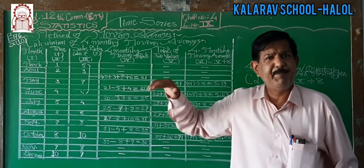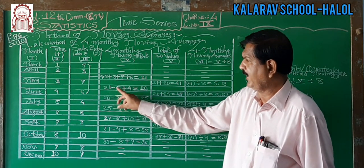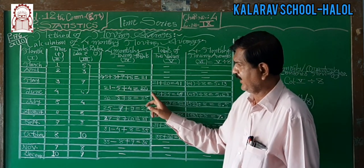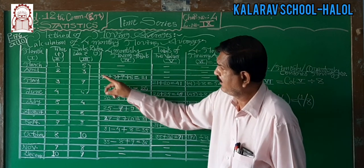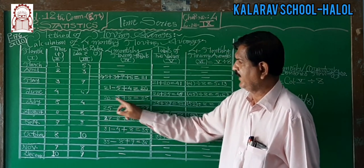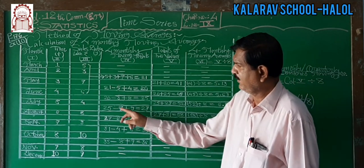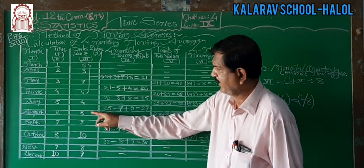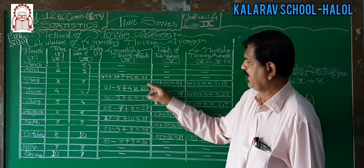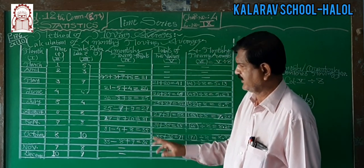To get the next total: subtract the previous month and add the next month. So 21 minus 5 plus 4 equals 20. Then 21 minus 3 plus 8 equals 26, but corrected: 20 minus 3 plus 8 equals 25. Then 25 minus 7 plus 9 equals 27. So the moving totals are: 21, 20, 25, 27, and so on.